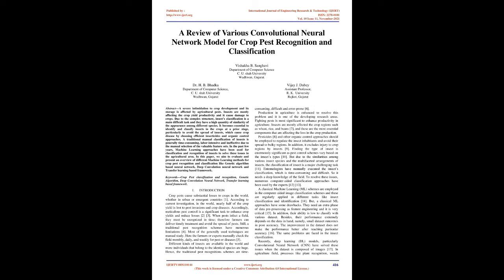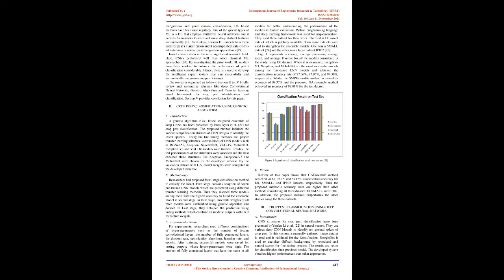To resolve these issues, numerous computer-aided classification approaches have been used by experts. Classical machine learning schemes are employed in computer-aided image classification and regularly applied in tasks like insect classification and identification. However, classical ML approaches have drawbacks: they require an extra phase of data pre-processing and feature engineering, which is very critical. Their ability to classify across various datasets is low, and their performance heavily depends on the data at hand, yielding poor accuracy with small datasets.